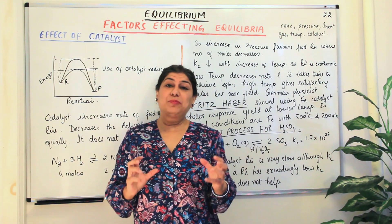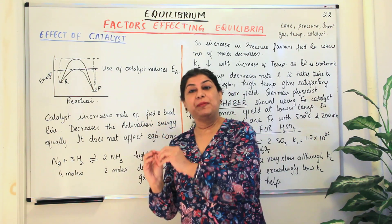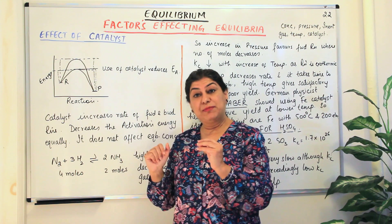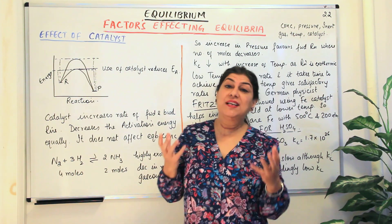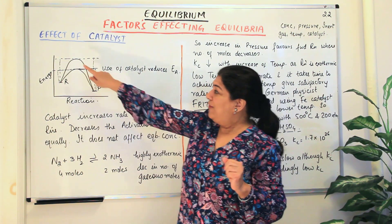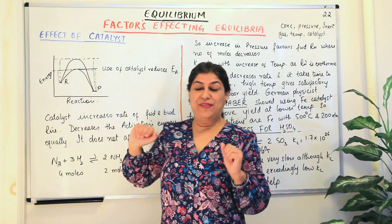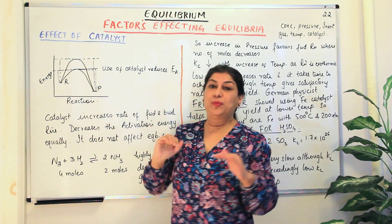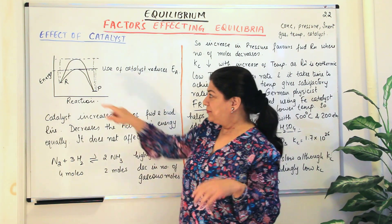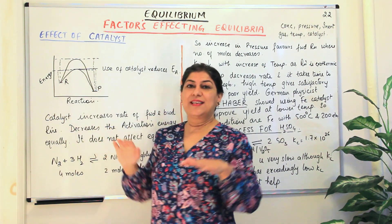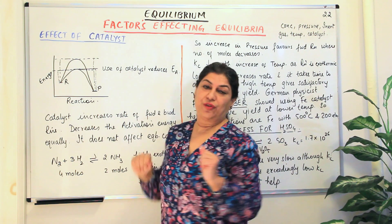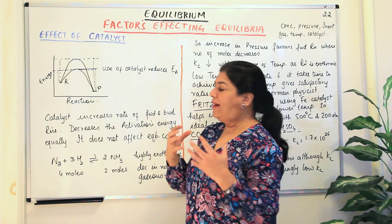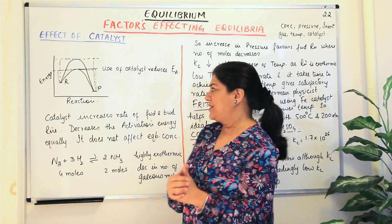A catalyst is something that comes and helps out a chemical reaction by making that chemical reaction easier. If we imagine this graph and we take R to be the energy of the reactants and B to be the energy of the products, the energy of reactants is usually higher than the energy of the products. What does a catalyst do and how does the reaction take place? Let us first understand that.